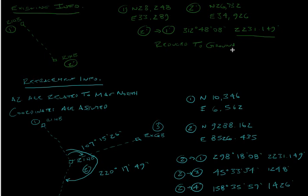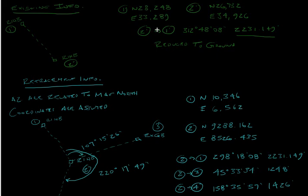The first thing you want to do is get at least one point in your assumed coordinate system into the same coordinate as that same point in your state plane coordinate system. So you want to translate — I'm going to translate point 1 to point 1 prime.